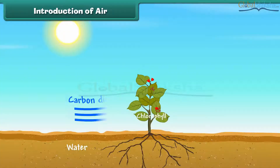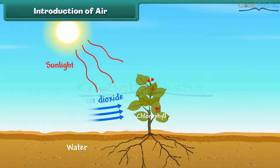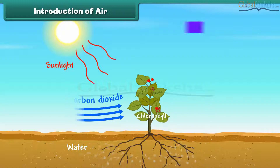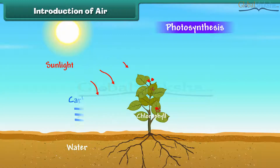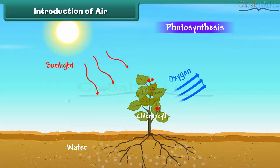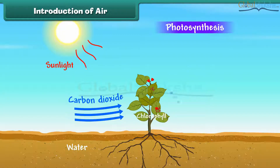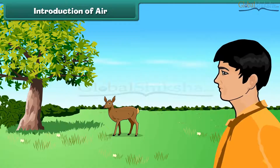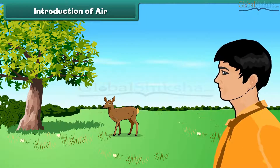Air is very important for almost all life on earth, including plants and animals. Plants need carbon dioxide from air to do photosynthesis and release oxygen into the air. Human beings and animals need to breathe air to get the oxygen they need to survive.